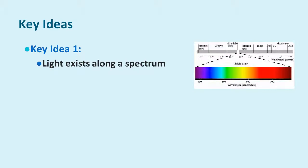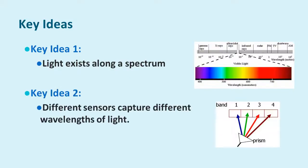Let's begin with some key ideas. Key idea number one: light exists along a spectrum. There is a spectrum of wavelengths of light of which we only see a portion. Remote sensing allows us to record the reflectance of different wavelengths of light. Key idea number two: different sensors capture different wavelengths of light. As a result, when we look at a remotely sensed image, we end up with a variety of bands, each one representing a different portion of the light spectrum.